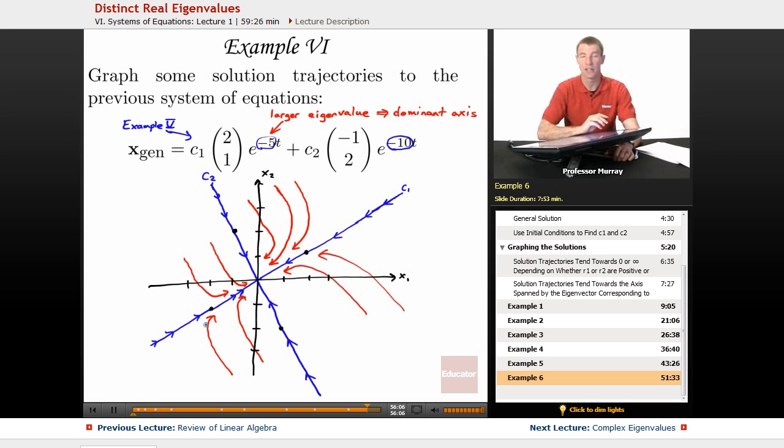And the reason for that is because C1 has the larger eigenvalue. Even though negative 5 and negative 10, they're both negative, so they're both very small. But you still want to find the larger one, and negative 5 is larger than negative 10. Let me kind of emphasize that. We're using the fact that negative 5 is larger than negative 10. So negative 5 gets to sort of call the shots on the other solutions. All the other solutions will be attracted towards that larger eigenvalue. It essentially means that the e to the negative 10t dies out quickly, and so the e to the negative 5t is the dominant term there.